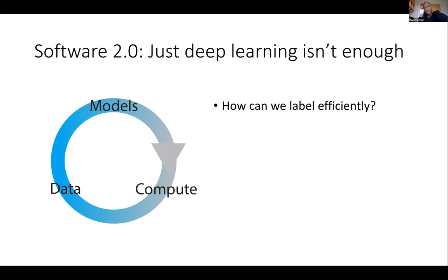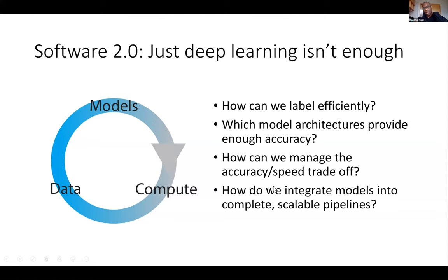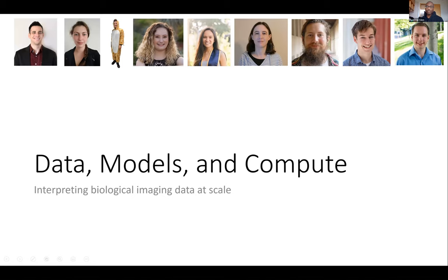At each of these different silos — data, models, and compute — there are challenges. On the data side, thinking about how we can label imaging data efficiently is a really important problem. On the model side, thinking about which model architectures actually provide enough accuracy to solve your problem, and also thinking about how we can manage the trade-off between model accuracy and model inference speed. On the compute side, thinking about how we can actually integrate these models into complete pipelines that can be scaled to large data sets. I'm going to outline some of the progress my own lab has made on these problems.